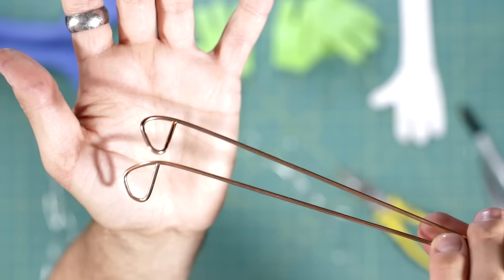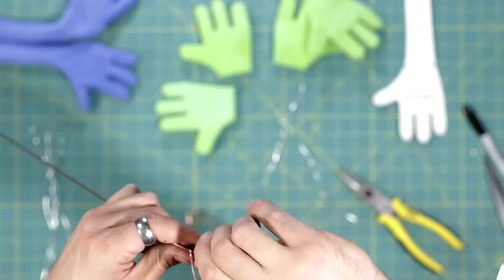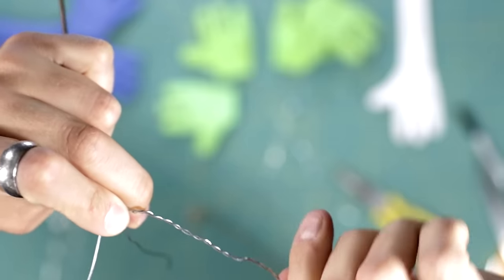I bend them into a P shape, then I feed the wire through, and then I start twisting them. This creates the armature for the fingers.